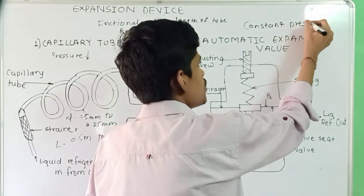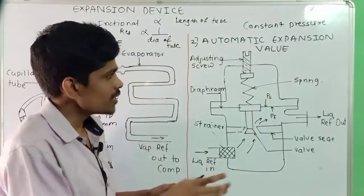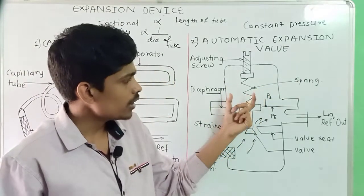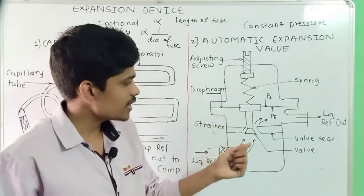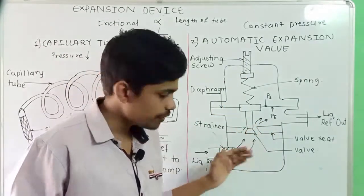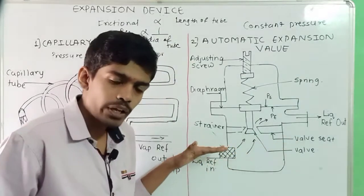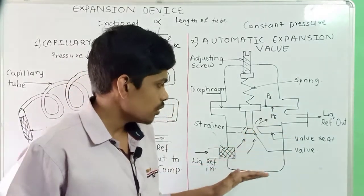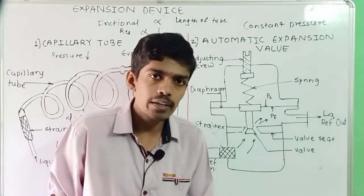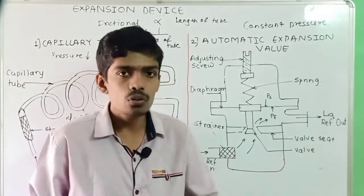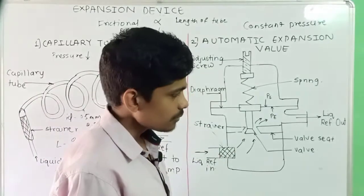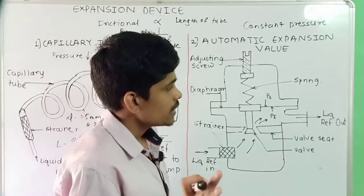The main parts of the Constant Pressure Expansion Valve are: a spring, which can be adjusted with the help of the adjusting screw; a diaphragm at the center; a valve seat, which acts as an orifice for the liquid refrigerant entering from the receiver; and a strainer, which removes all contaminants and unwanted materials so only pure refrigerant is sent further inside.